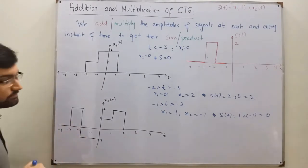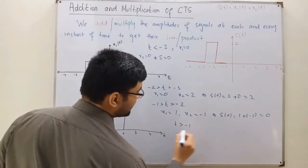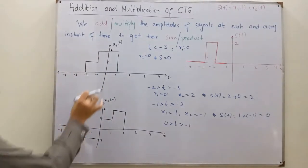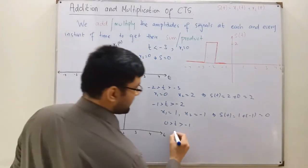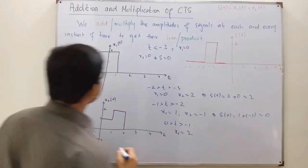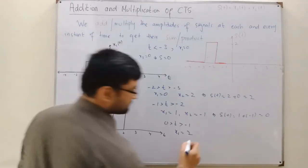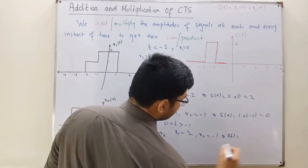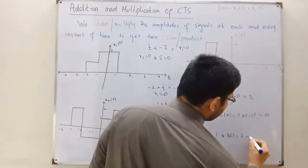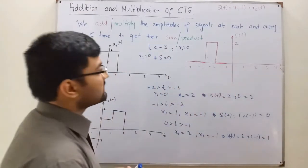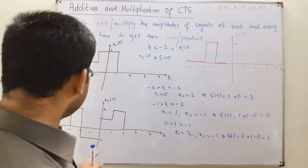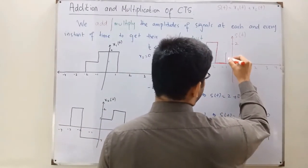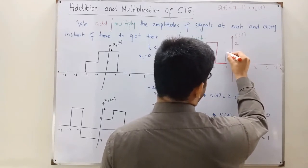From negative 1 to 0: when t is greater than negative 1 and less than 0, x1 is 2 and x2 is negative 1. So their sum is 2 plus (negative 1), which equals 1. From negative 1 to 0, the sum goes to 1.